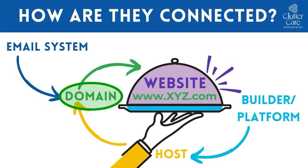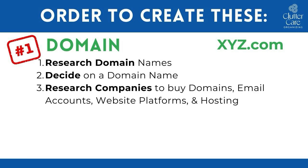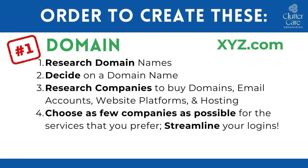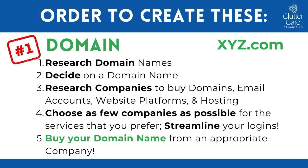The last thing that is extremely important is in which order to create these systems, because everything that you do connects to your domain name. That is the first and foremost item of business when starting your business. But before you do that, please research domain names first, which is a whole separate video and discussion. So first, you're going to research domain names that are appropriate for you and your business. Then you're going to decide on a domain name that is available. Then you are going to research companies from which to buy your domain name, maybe also an email account, maybe also a website platform and hosting, so that you're combining systems. Then you are going to choose as few companies as possible for the services that you prefer so that you can streamline your logins. And then you are going to finally buy your domain name from an appropriate company.